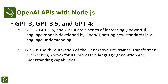Now that we have explored ChatGPT's capabilities, let's move on to OpenAI's groundbreaking language models: GPT-3, GPT-3.5, and GPT-4, associated with ChatGPT. GPT-3, GPT-3.5, and GPT-4 are a series of increasingly powerful language models developed by OpenAI, setting new standards in AI language understanding.